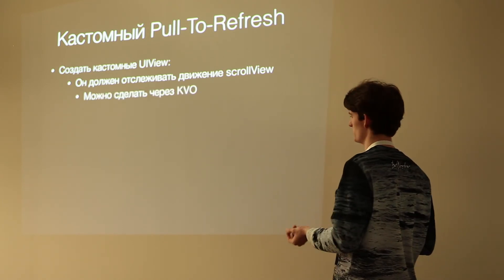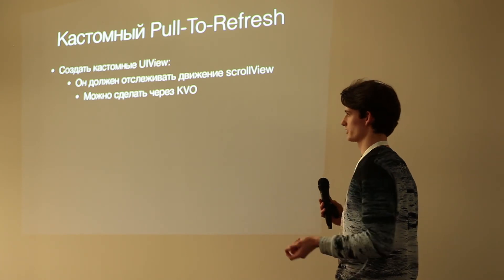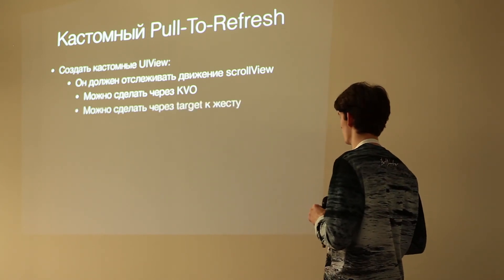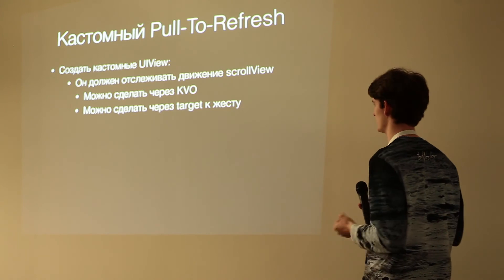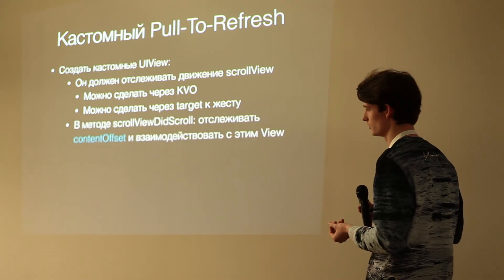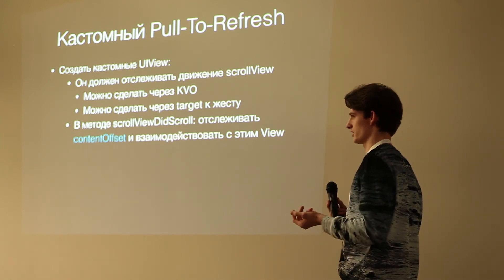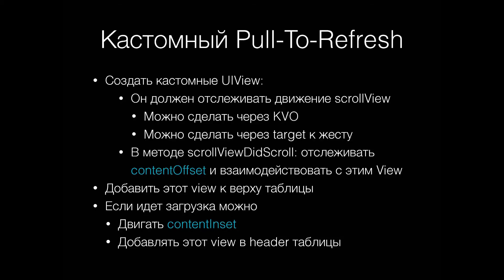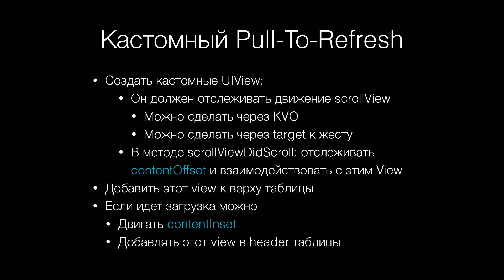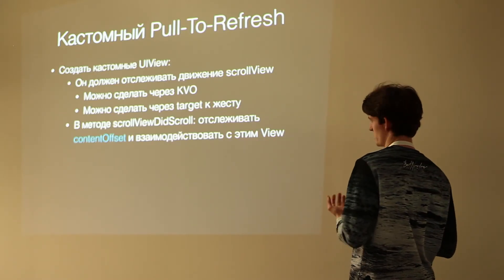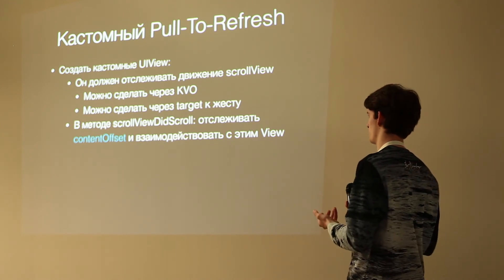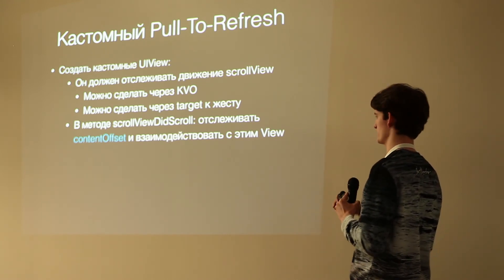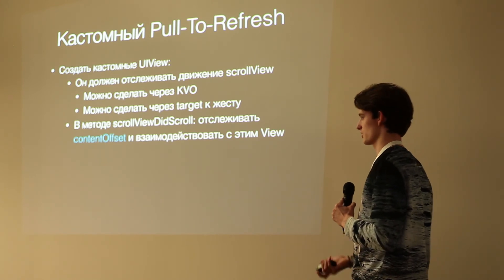Как отслеживать смену bounce? Через KVO можно подписаться на смену contentOffset, или сделать target к жесту, который позволяет отслеживать scrollViewDidScroll. В методе scrollViewDidScroll нужно отслеживать contentInset и взаимодействовать с view. Для базового случая: если contentOffset стал отрицательным — начинаем показывать view; пока не дошёл до минус 100 — показываем анимацию сдвига; при минус 100 считаем, что загрузка началась.